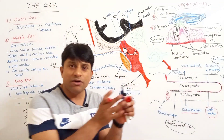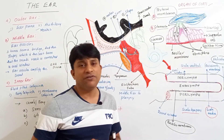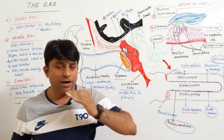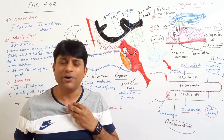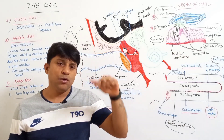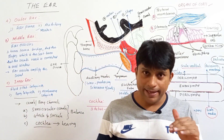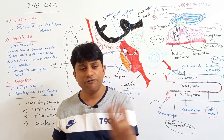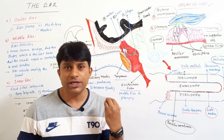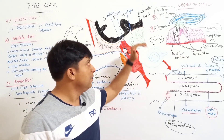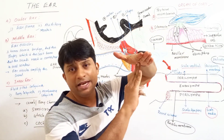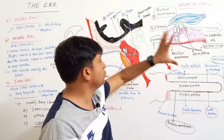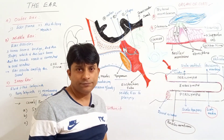The organ of Corti is the organ of hearing, present on the basilar membrane. Its components are hair cells (sensory/receptor cells) with stereocilia on one end and nerve fibers on the other end. All the nerve fibers together form the cochlear nerve, which is a branch of the eighth cranial nerve. All the stereocilia are in connection with the elastic tectorial membrane, and together these make up the organ of Corti.